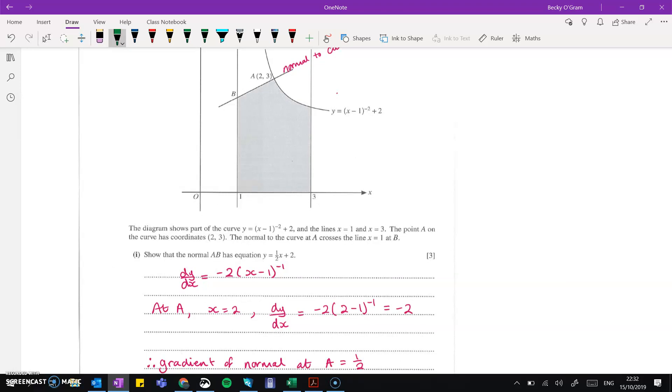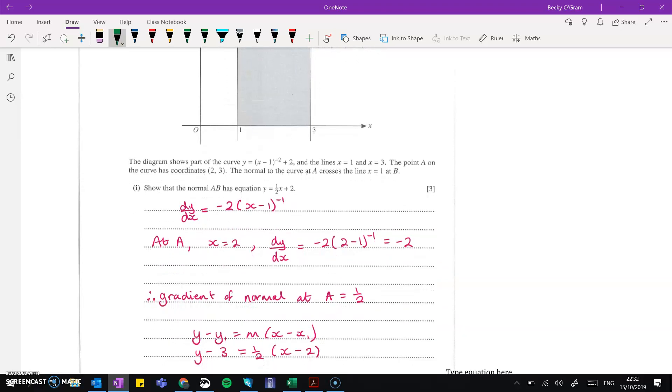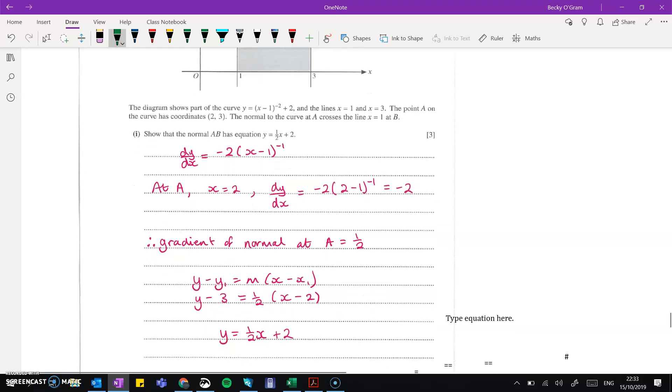That means the gradient of the normal will be the negative reciprocal, so that's a half. Then just using our equation of a line formula, we can put in the coordinates of 2, 3, and the gradient of a half, and show that that gets us the equation that we're looking for.